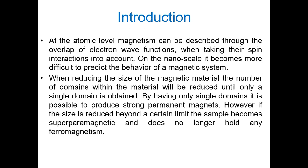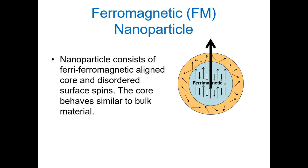While we still hold ferromagnetism within the core, the thermal fluctuations due to size reduction are enough to fluctuate the magnetic moment of the core. A ferromagnetic nanoparticle consists of a ferromagnetically aligned core, similar to its bulk counterpart, and disordered surface spins. As we already saw in the basics of nanomagnetism lecture, the surface spins are different from the core spins. The core behaves similar to the bulk material, while the disordered surface spins have different orientations compared to the bulk.